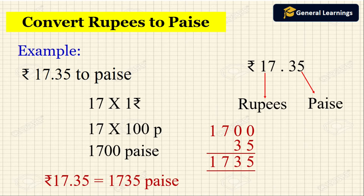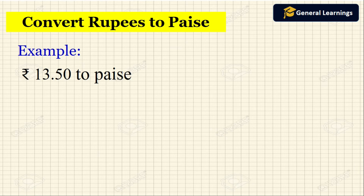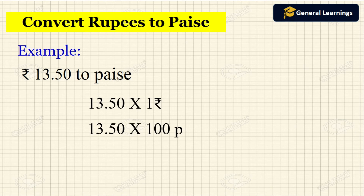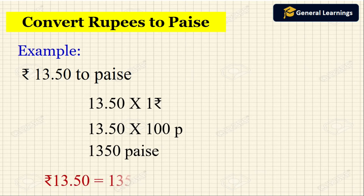This can also be done in a short form. Here they have asked us to convert rupees 13.50 to paise. 13.50 can be written as 13.50 into 1 rupee. Since 1 rupee equals 100 paise, 13.50 into 100 gives us 1350 paise.